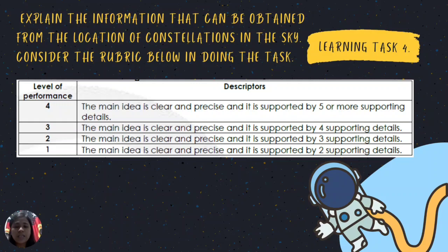For Learning Task Number 4: explain the information that can be obtained from the location of constellations in the sky. Consider the rubric below. Level 4: the main idea is clear and precise and is supported by five or more supporting details. Level 3: supported by four supporting details. Level 2: supported by three supporting details. Level 1: supported by two supporting details.